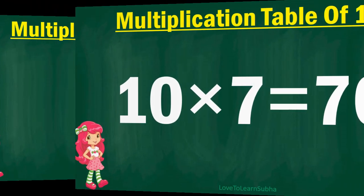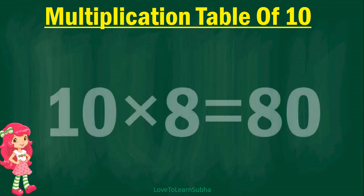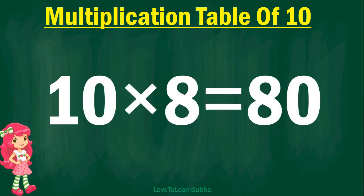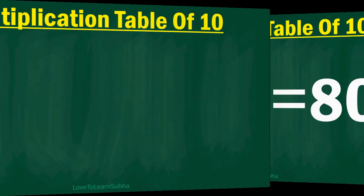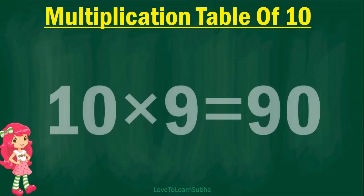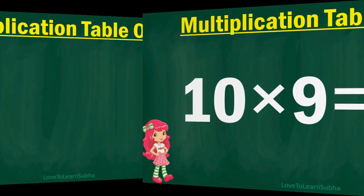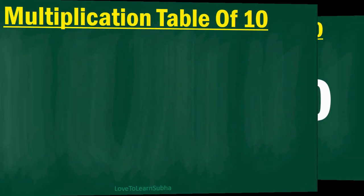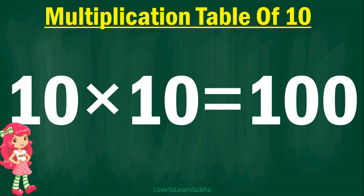10 eights are 80, 10 nines are 90, 10 tens are 100.